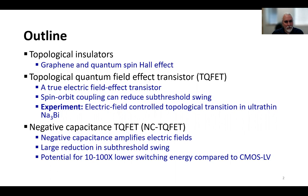And then describe the topological quantum field effect transistor that we have previously proposed. This is an electric field effect transistor. It uses spin orbit coupling to reduce the subthreshold swing. And I'll show you experiments that we've done in my lab on an electric field controlled transition from topological to conventional insulator in ultrathin sodium-3-bismuth, which could form the basis of such a transistor.